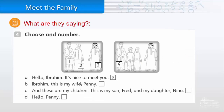Look at the conversation between Dave and his family and Ibrahim. Match the numbers with the sentences. A: Hello Ibrahim, it's nice to meet you — who said this? It's number two, Penny. B: Ibrahim, this is my wife Penny — who said this? It's number one, Dave. C: And these are my children — this is my son Fred and my daughter Nina. This was said by Fred at number four.